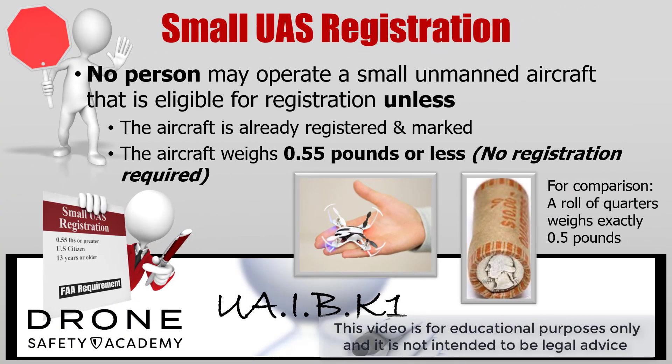The rules and regulations state that no person may operate a small unmanned aircraft that is eligible for registration unless the aircraft is already registered and marked, or the aircraft weighs .55 pounds or less. For comparison, a roll of quarters weighs exactly half a pound.